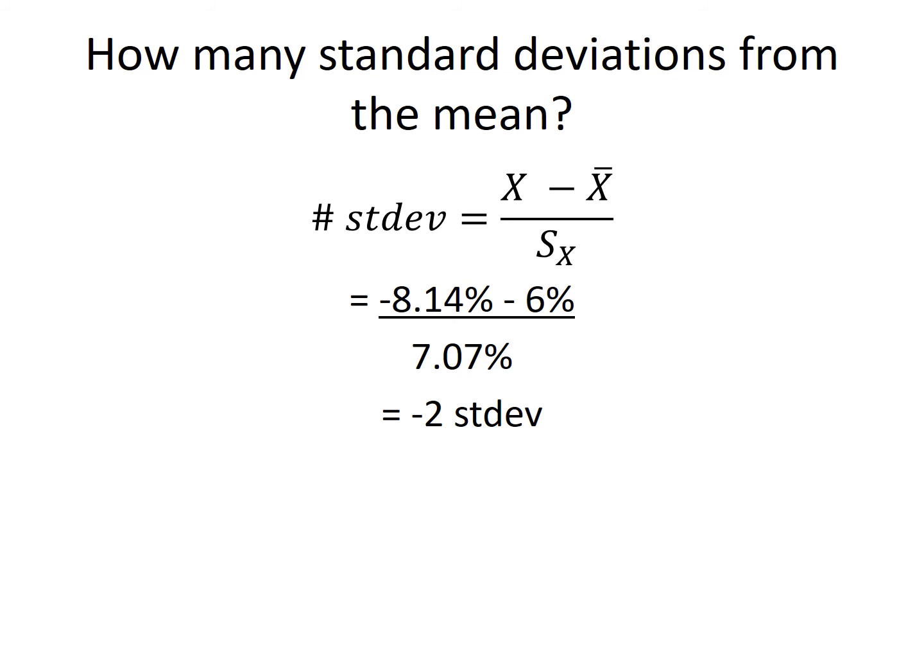Negative 8.14% minus the mean, which is 6%, gives us negative 14.14%. Divided by 7.07 gives us negative 2 standard deviations. So we know that negative 8.14% is 2 standard deviations below the mean.